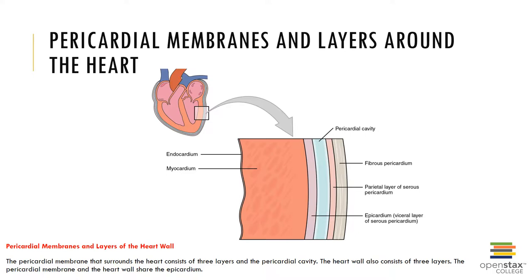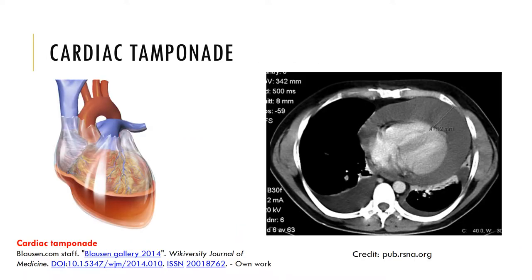During each beat the heart changes size and shape. The pericardial cavity permits these changes, and the slippery pericardial lining prevents friction between the heart and adjacent structures. The relationship between the heart and the pericardial cavity resembles a fist pushing into a balloon. Cardiac tamponade occurs when fluid builds up in the pericardial cavity surrounding the heart.